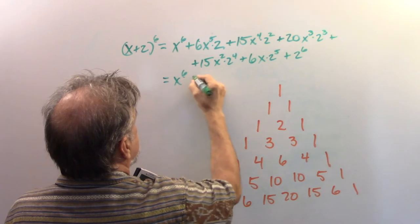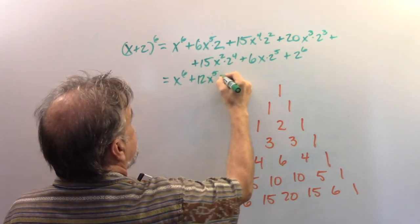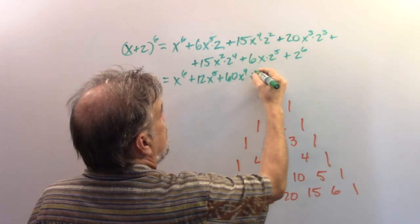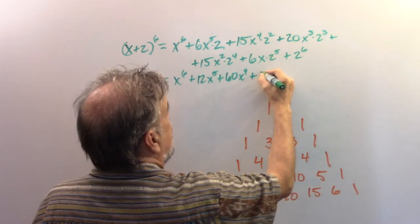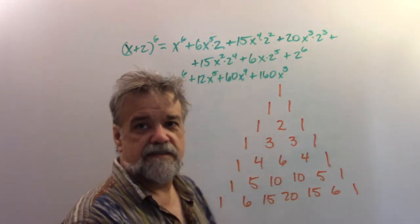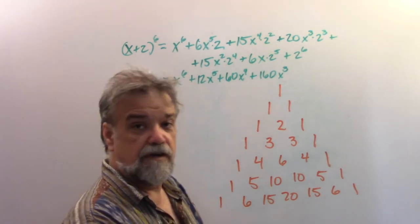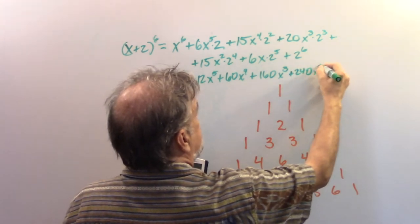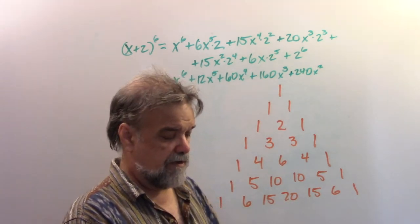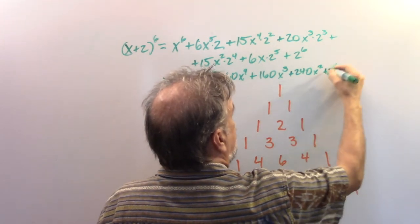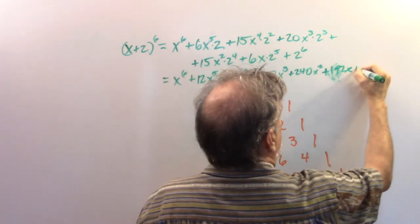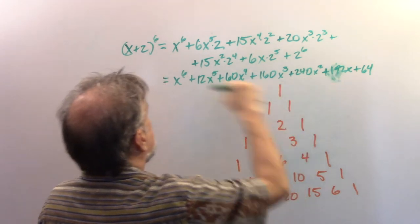Now multiply out the powers of 2 to get the final coefficients: x to the sixth + 12x to the fifth + 60x to the fourth + 160x-cubed + 240x-squared + 192x + 64. That is (x + 2) to the sixth power. It requires some arithmetic, but it's far easier than multiplying (x + 2) by itself six times.